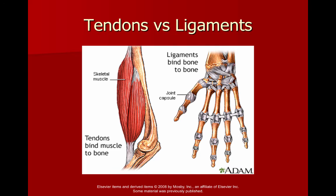Both tendons and ligaments have collagen and fibroblasts and give a very strong elastic quality. Ligament fibers actually have more elastin than tendon fibers. They also facilitate movement and limit movement — don't forget how important it is for us to be able to stop moving. Tendons and ligaments help make that happen; it's a big part of their role.